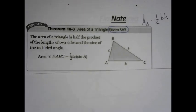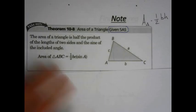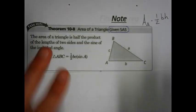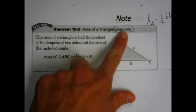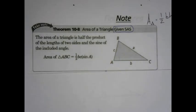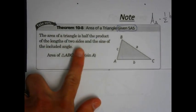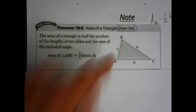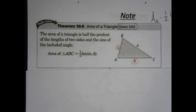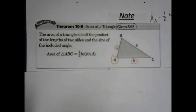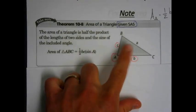Now we're going to use trigonometry to give you a new formula. What happens with the area of a triangle given side, angle, side? You know one of the side lengths, a given angle, and the other side length. Well, the area of the triangle is half the product of the lengths of the two sides and the sine of the included angle. So if we knew the length of B and C — and this is not a right triangle — and we knew angle A, the formula for the area is one half B times C times the sine of A.